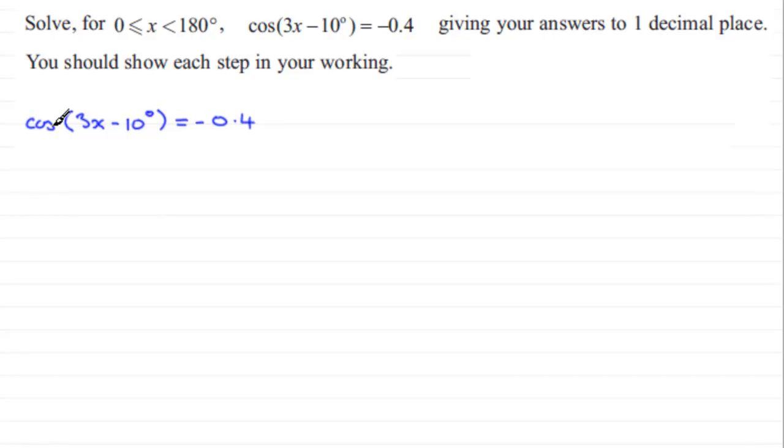Next what I'd want to do is take the inverse cosine to both sides and that's going to leave me with 3x - 10° equals the inverse cosine of -0.4.